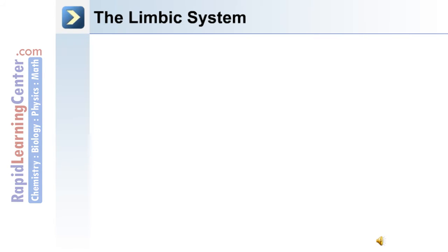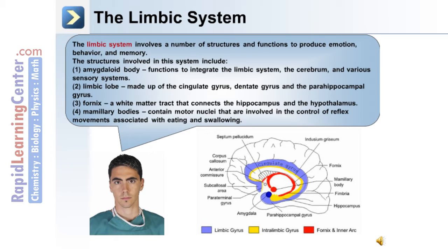Also located deep within the brain is the limbic system, which involves a number of structures and functions to produce emotion, behavior, and memory. The structures include: the amygdaloid body, which integrates the limbic system, the cerebrum, and the various sensory systems; the limbic lobe, made up of the cingulate gyrus, dentate gyrus, and parahippocampal gyrus; the fornix, a white matter tract connecting the hippocampus and the hypothalamus; and the mammillary bodies, which contain motor nuclei involved in reflex movements associated with eating and swallowing.